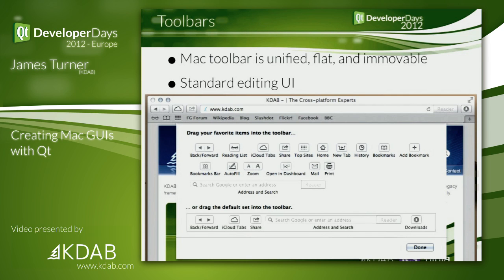The very first and easiest one is the unified toolbar. The toolbar is attached to the window with no separate line — that missing two pixels is straightaway a cue for a non-native application. Using the unified toolbar is a classic example. It's simply a setter function — setUnifiedTitleAndToolBarOnMac on QToolBar — switch it on and it works.